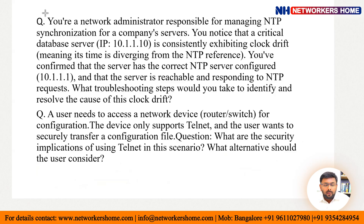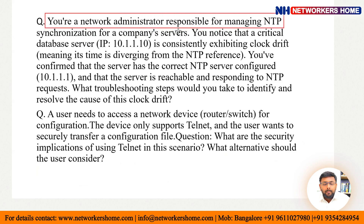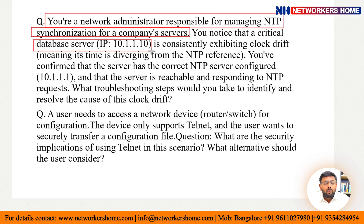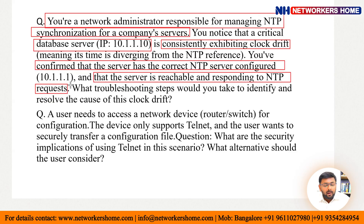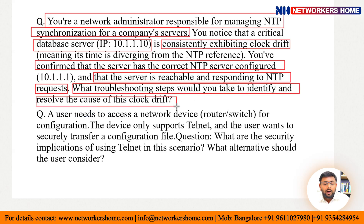You are a network administrator responsible for managing NTP (Network Time Protocol) synchronizations for a company server. You notice that a critical database server with IP 10.1.1.10 is consistently exhibiting clock drift — meaning its time is diverging from the NTP reference. You have confirmed that the server has the correct NTP server configured (10.1.1.1), that server is reachable and responding to NTP requests, but what troubleshooting steps would you take to identify and resolve this clock drift?